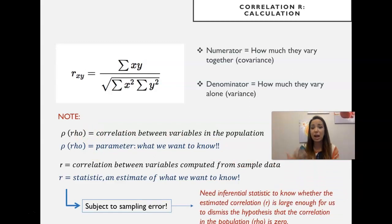Just like we've done for other types of problems, it's the same logic every single time, same process every single time. Just as we did to assess if the difference between means in a sample is large enough for us to conclude that it's different from zero in the population, we need inferential statistics here to know whether the estimated correlation coefficient, R, is large enough for us to dismiss the hypothesis that the correlation in the population, which is what we want to know, rho, is zero.